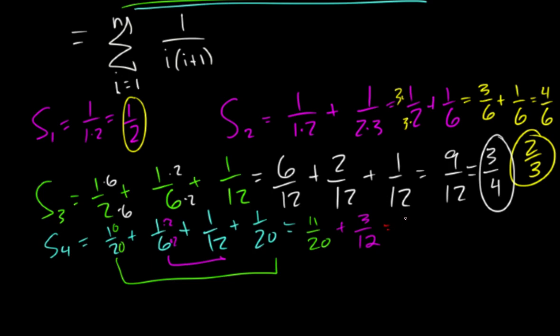If we reduce that one we get 11 20ths plus 1 fourth and then it's easier to get that common denominator so we're going to be 11 plus 5 over 20 so that's 16 over 20, divide both those by 4 we get 4 fifths.